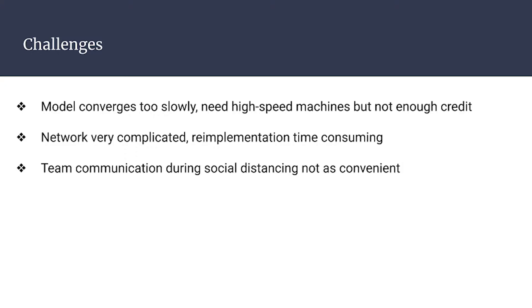We faced a lot of challenges. The model converges too slowly, which means high-speed machines are required, but we do not have enough AWS credit. Also, the PoseGAN network is complicated, and re-implementation consumed a lot of our time. Besides, our team communication effectiveness was also affected by the current situation.